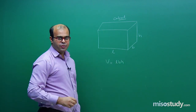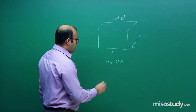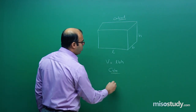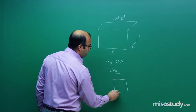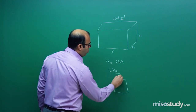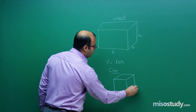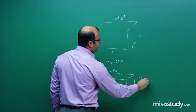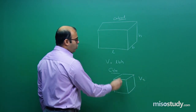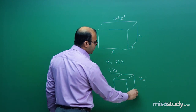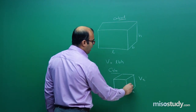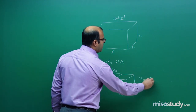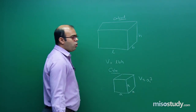There is a specific case: if we take length, breadth, and height all equal, then this cuboid actually becomes a cube. This cube will have a volume equal to A × A × A, which is A³. This is the volume of the cube.